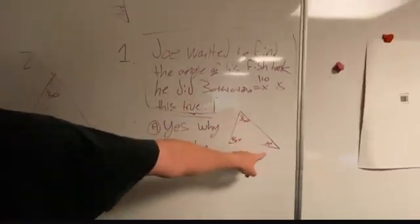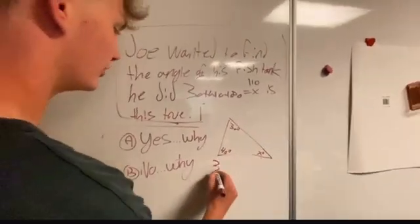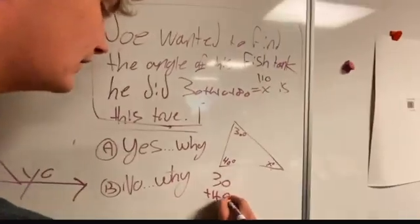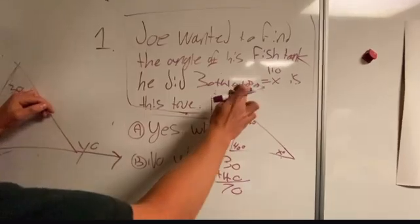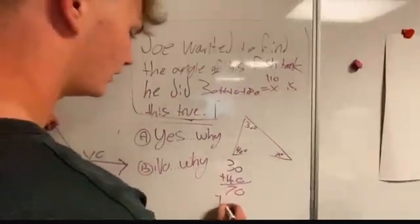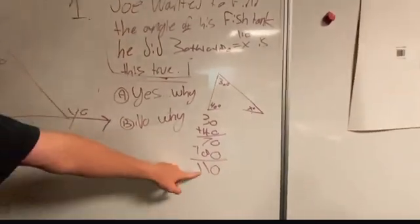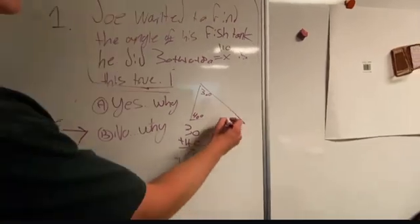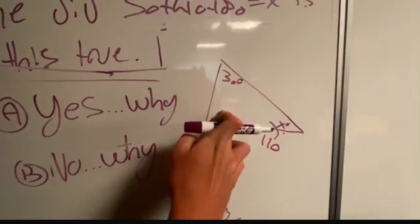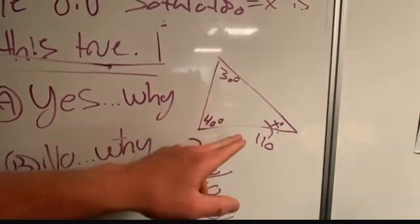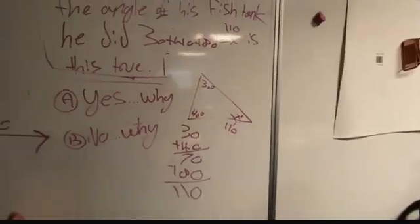What you have to do is add these two numbers: 30 plus 40 equals 70. Then you bring in and see minus 180 — that will equal 110. You want to plug this in right here. This is 110, and you have to double check by adding these two: is 70 correct? Then add the 110 to see if it will equal 180 — that's how you double check.